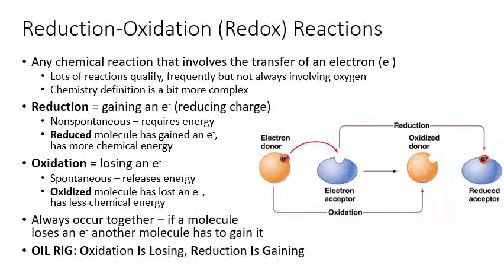The definition of a redox reaction we'll be using is just any reaction where an electron is transferred. Every redox reaction has two parts: the reduction part and the oxidation part. A reduction is where a molecule gains an electron. An oxidation is where a molecule loses an electron. Any time one molecule is oxidized and loses an electron, that electron needs to go somewhere, so it ends up going to another molecule that will gain it — that's the reduction part.